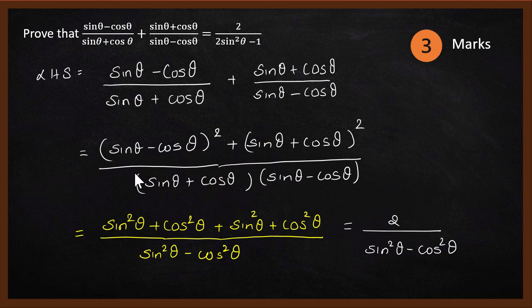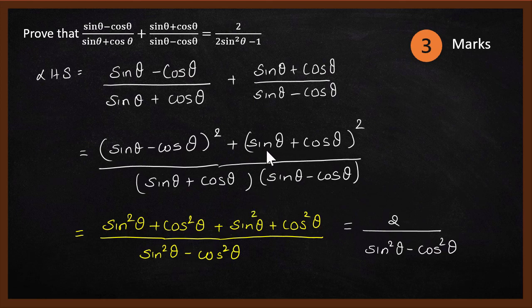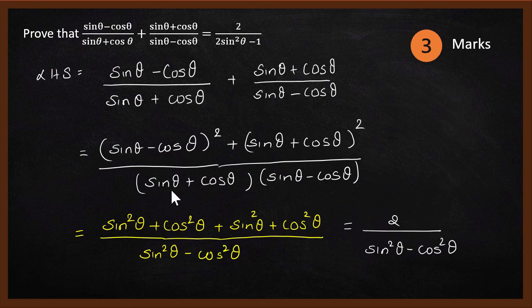Now let's expand this. If you expand sin theta minus cos theta whole squared, you get sin squared theta plus cos squared theta minus 2 sin theta cos theta. The minus 2 sin theta cos theta cancels with the plus 2 sin theta cos theta from the second expression. So you're only left with sin squared theta plus cos squared theta and sin squared theta plus cos squared theta in the numerator. For the denominator, A plus B times A minus B gives sin squared theta minus cos squared theta.